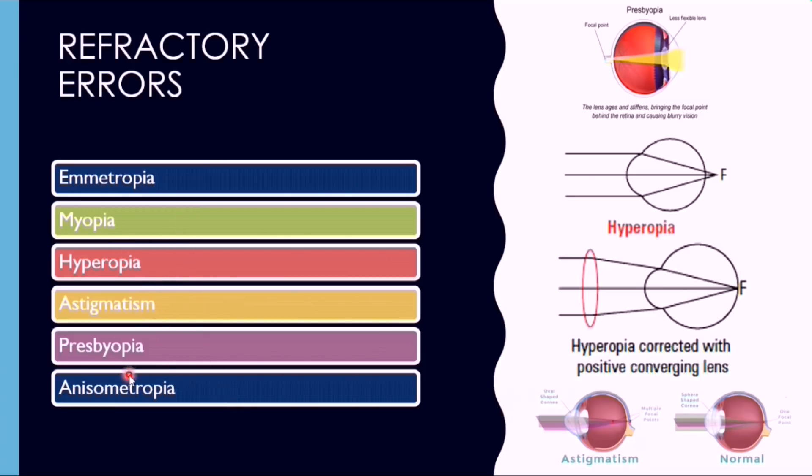Hyperopia is also known as farsightedness and convex lenses are used for the treatment of farsightedness. On the other hand, presbyopia is actually hardening or reduction in elasticity of lens that results due to normal aging process, that is when we are more than 40 years of age. It is also corrected with convex lenses. Thank you for watching.